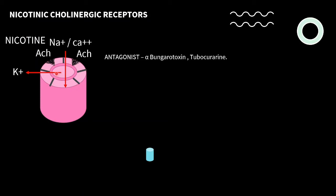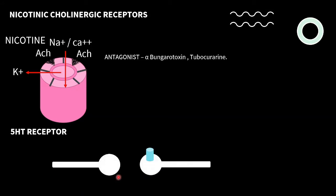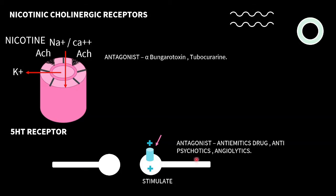The second example of an excitatory transmitter-gated ion channel is the 5-hydroxytryptamine receptor. Whenever a neuron produces 5-hydroxytryptamine, it leads to opening of this ion channel, positive charge enters the cell, the cationic load increases, the cell depolarizes and gets stimulated. Antagonists to this receptor include anti-emetic drugs, anti-psychotic drugs, and anxiolytics.